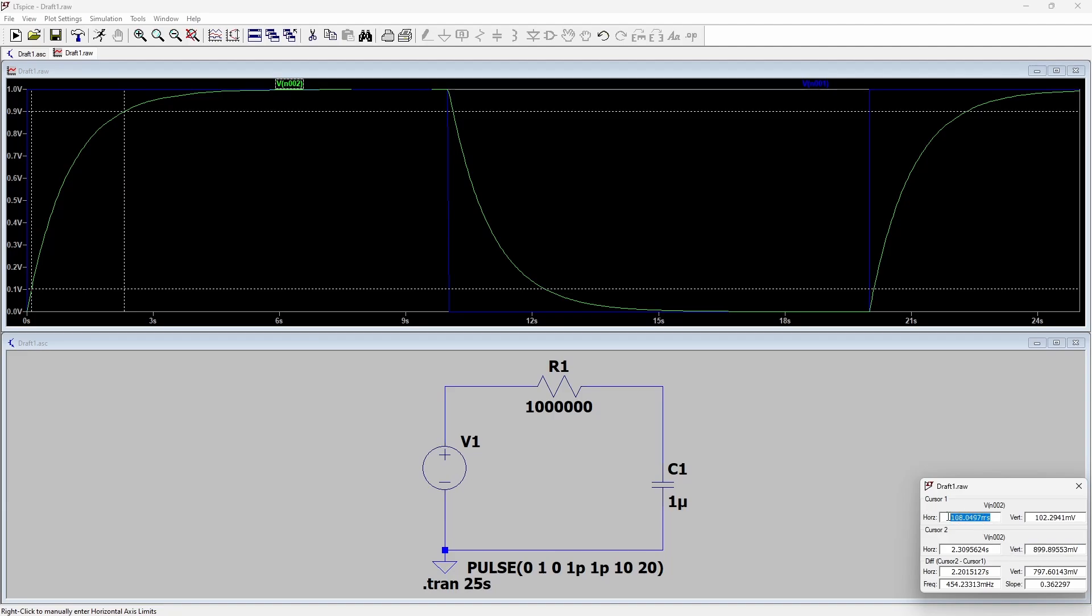And you've got the two time placements for the marker down here. So you've got 108 milliseconds and 2.3 seconds here. The difference between the two points is 2.2 seconds.